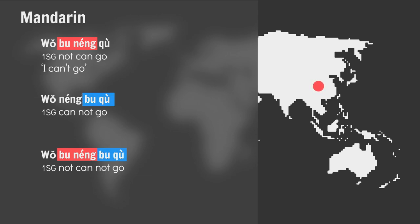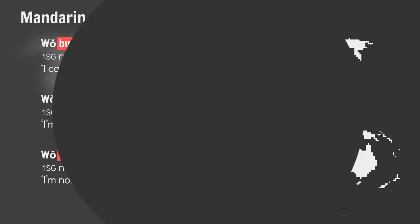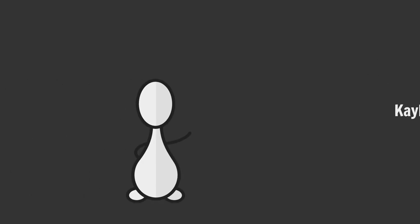In other words: 'I can't go,' 'I'm capable of not going,' and 'I'm not capable of not going.' This is awesome because in most other languages, like English, if you negate the modal verb you negate the whole statement: 'Kaylee can go' versus 'Kaylee can't go.'